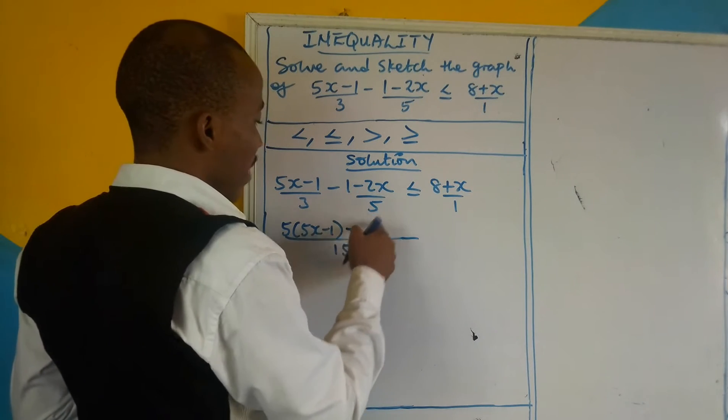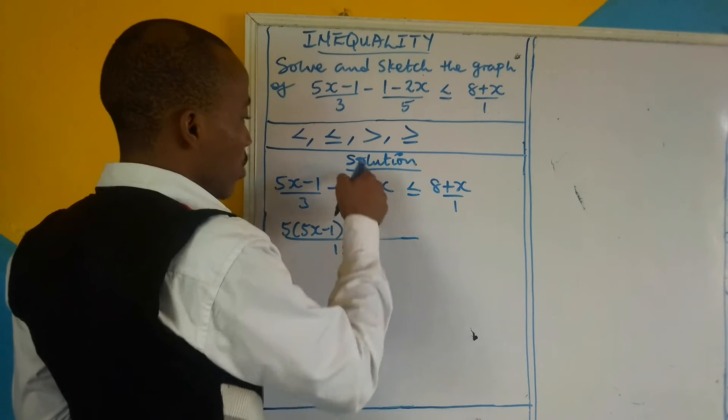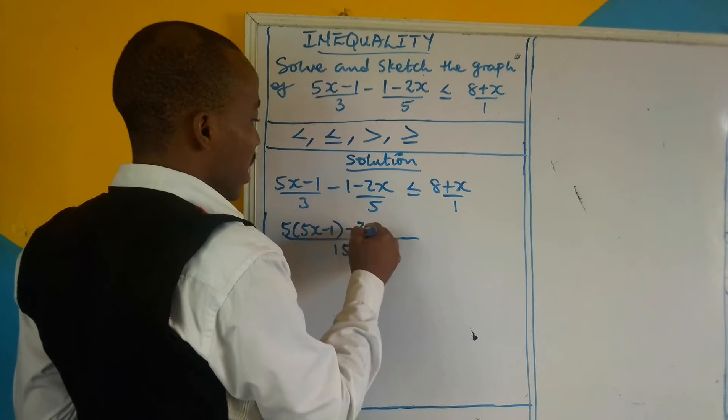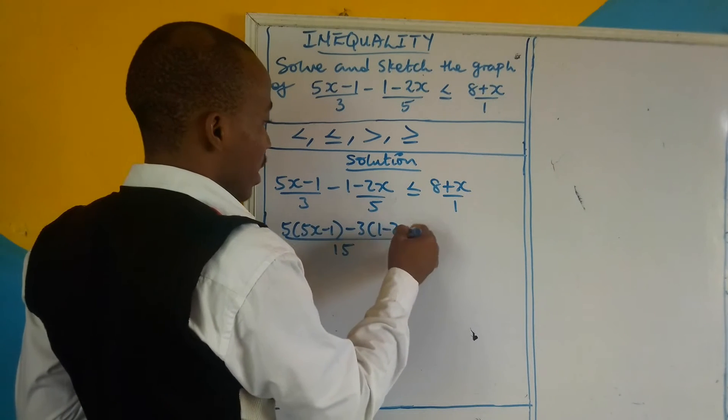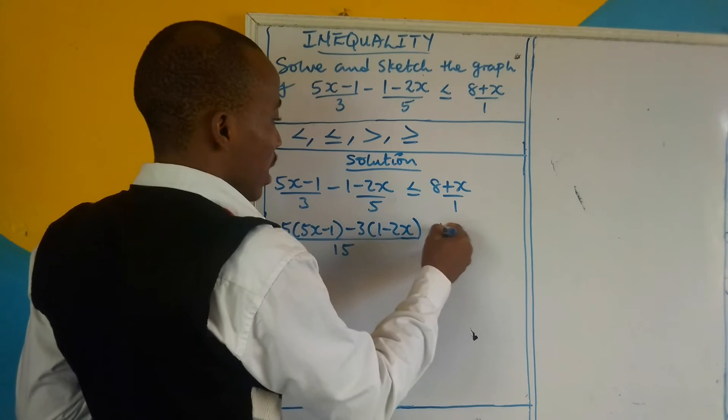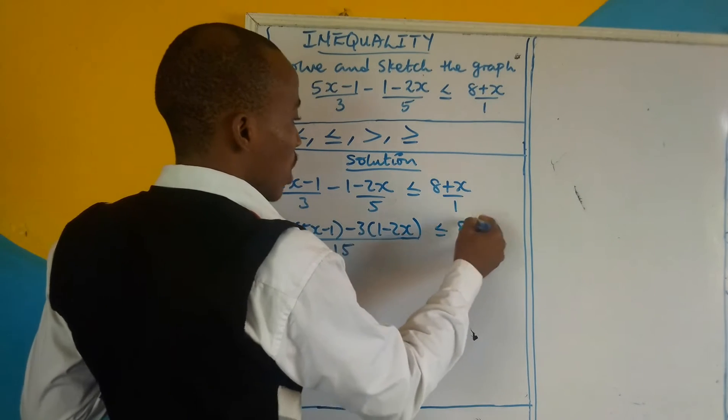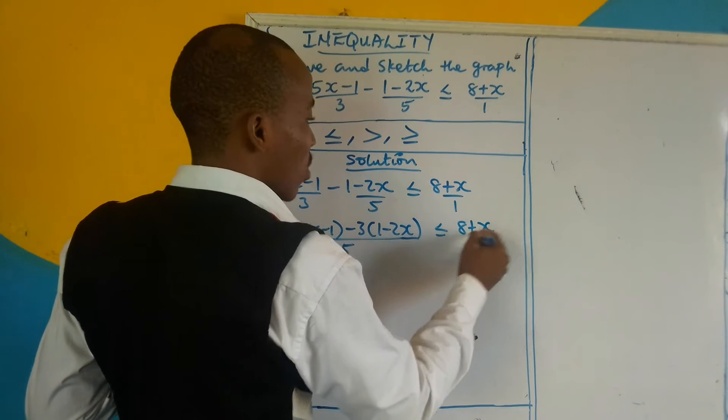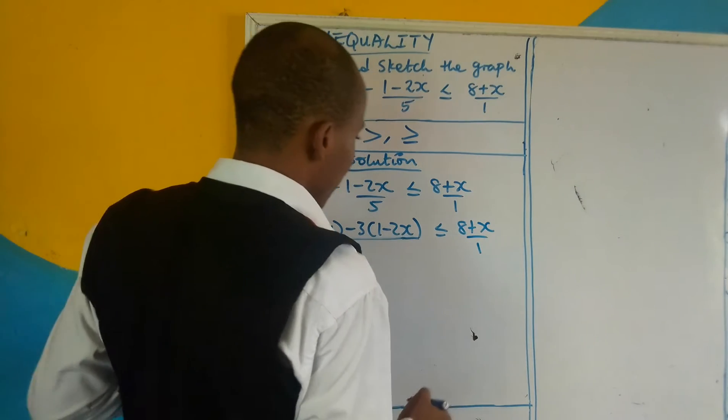5 into 15 is 3. We multiply this, we have it as 3 bracket. 1 minus 2x, is less than or equal to 8 plus x over 1.